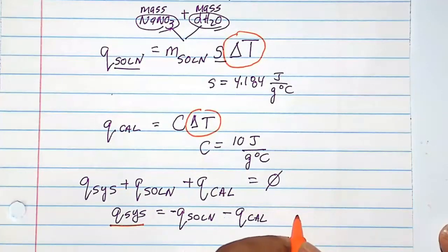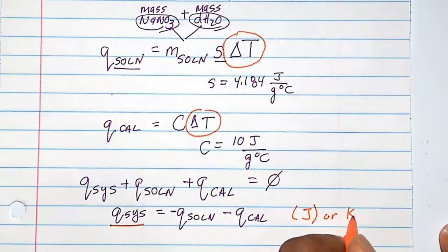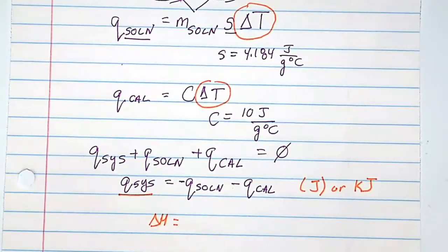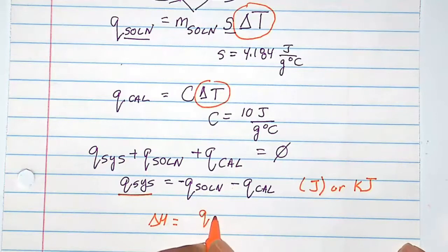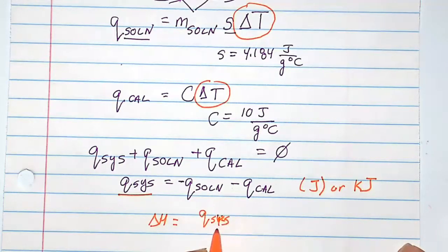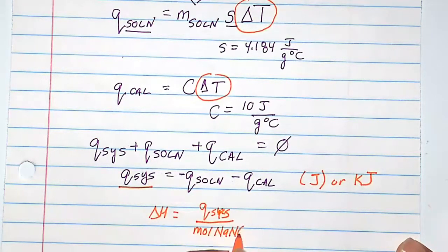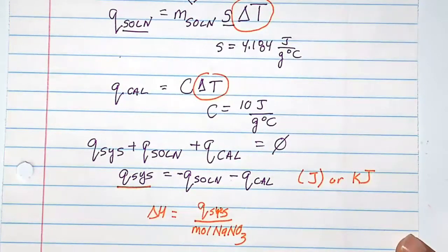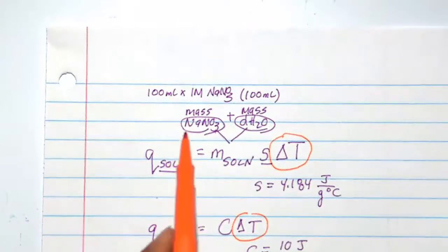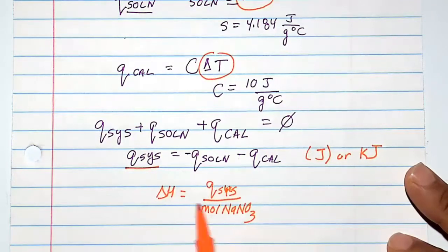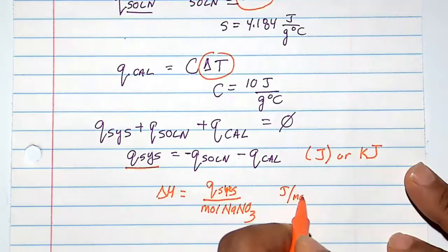Also be cognizant about units. Units of heat are either in joules or kilojoules. Enthalpy, delta H, has conventional units of kilojoules per mole or joules per mole. In this case, delta H equals Q of the system divided by the moles of NaNO3 sodium nitrate. You know the moles of sodium nitrate because that is how you determined the grams, so once you have Q, divide by moles to get the proper units.